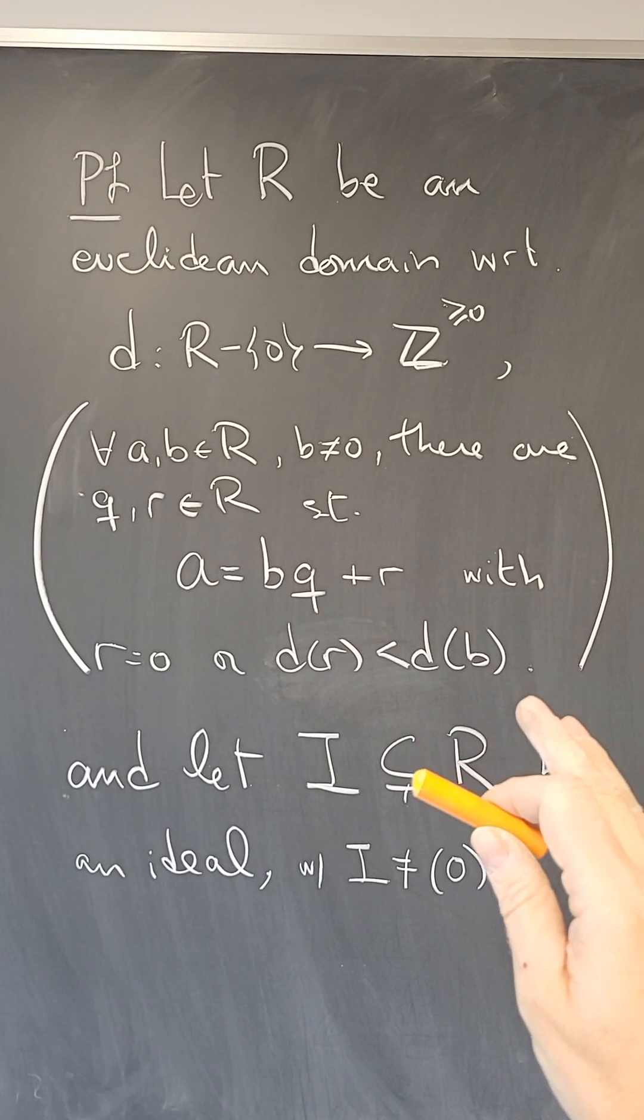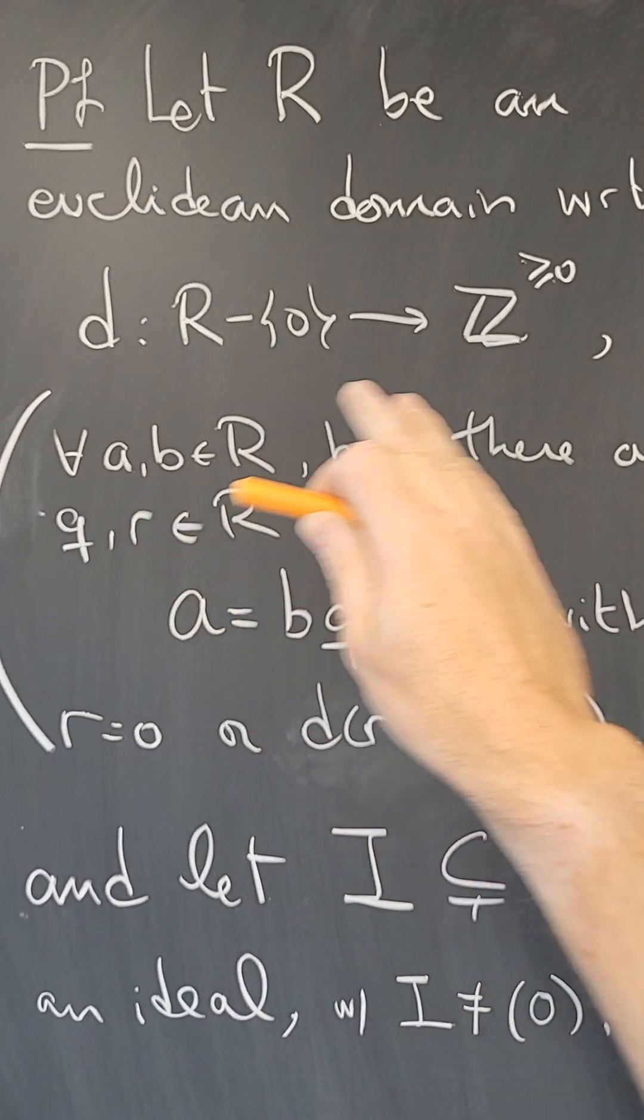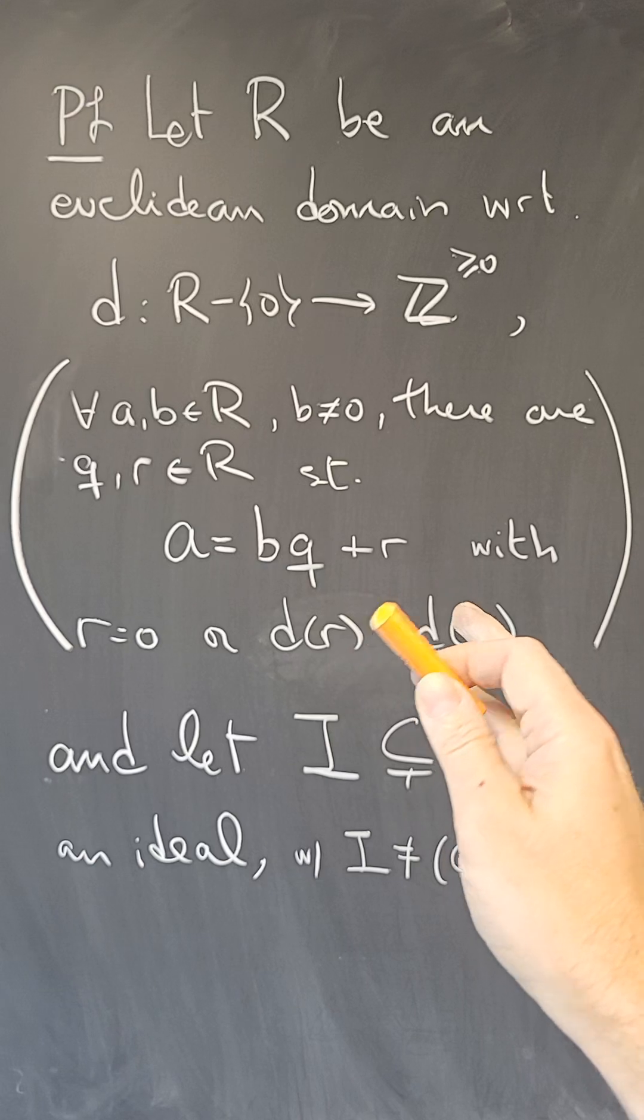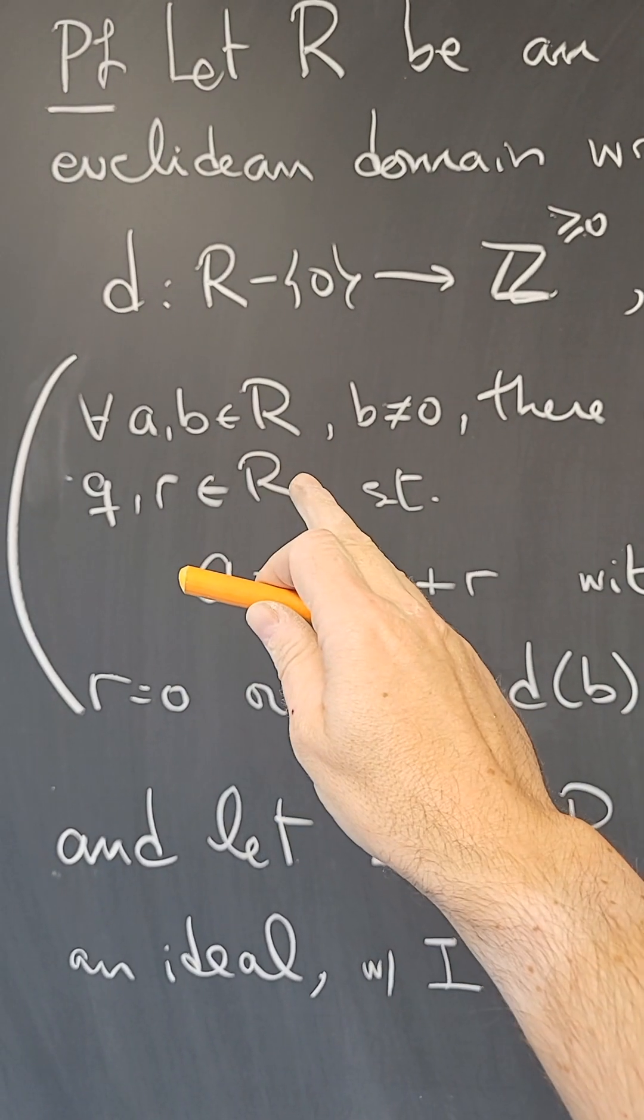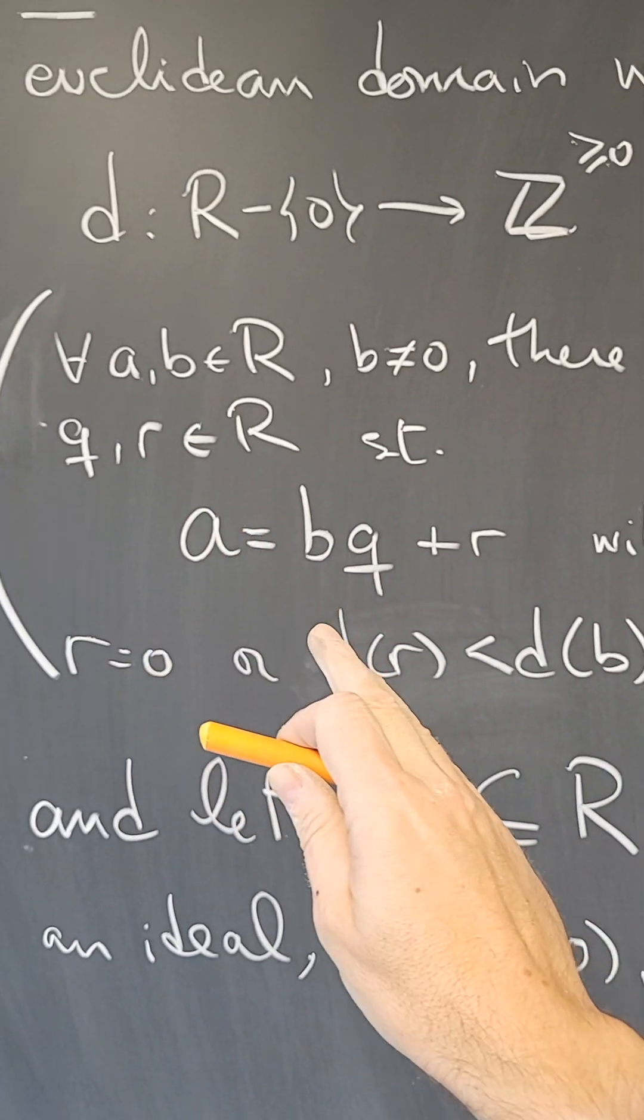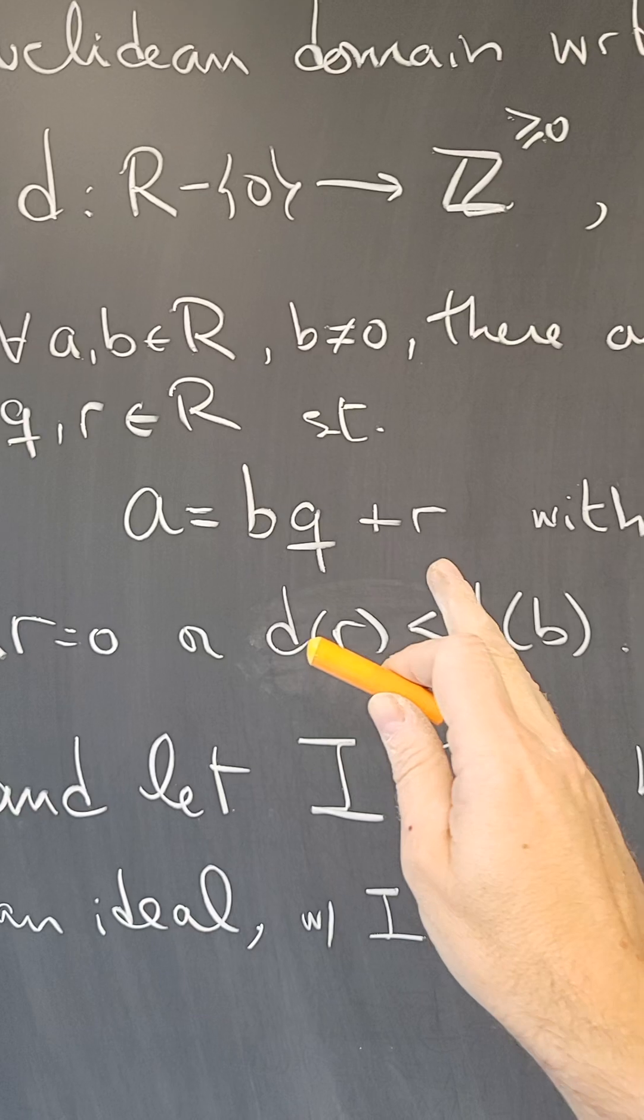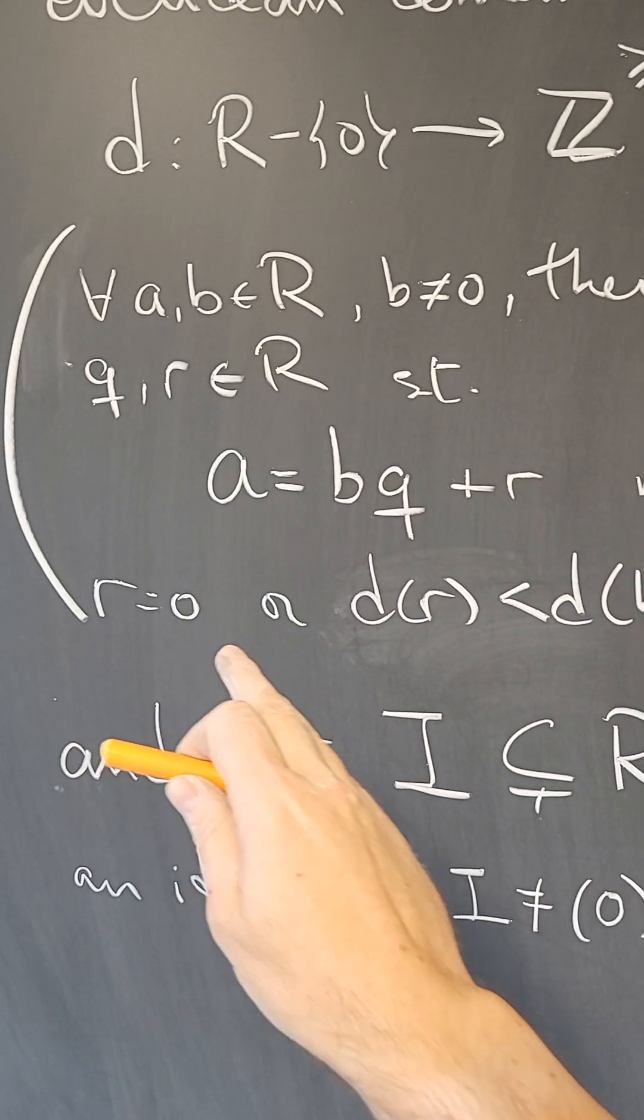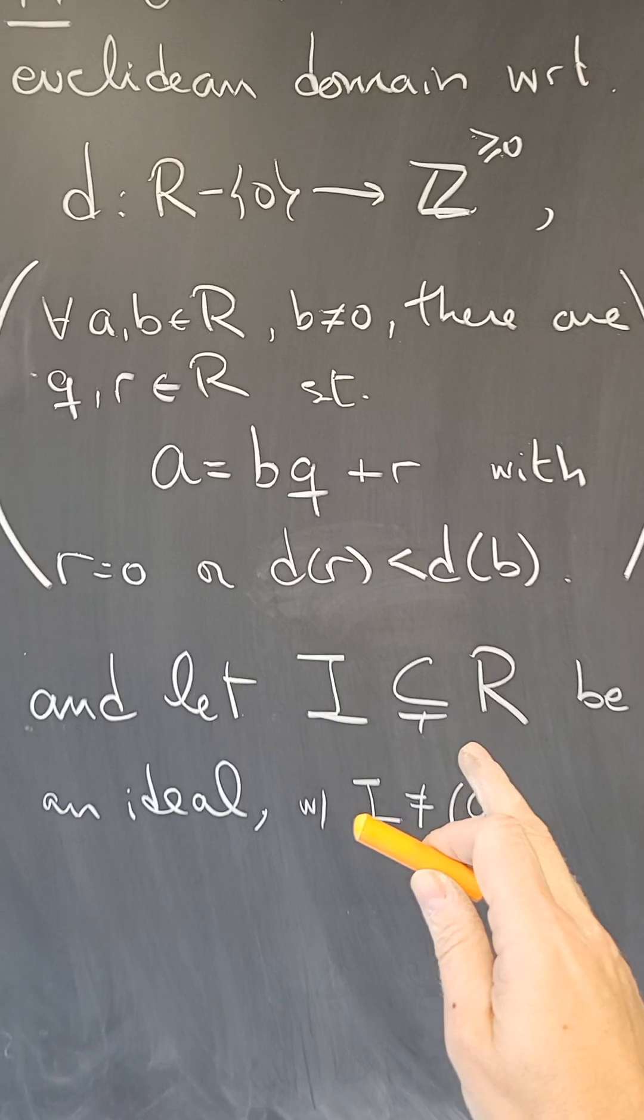The proof goes as follows. Let R be a Euclidean domain with respect to a function D. Remember that what that means is that there is a long division with respect to that D. So if you have any A, B in the ring and B is non-zero, there are Q and R such that A is B times Q plus R, where that remainder is either zero or D of R is less than D of the B you are dividing by.